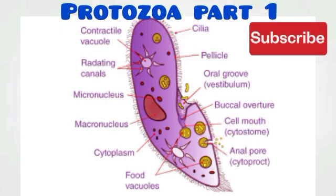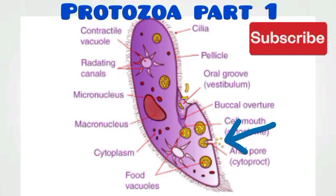Digestion occurs inside the food vacuole where proteins are digested by proteases, carbohydrates by amylase, and lipids by lipase. Undigested food is eventually expelled from the body through the cytoproct.